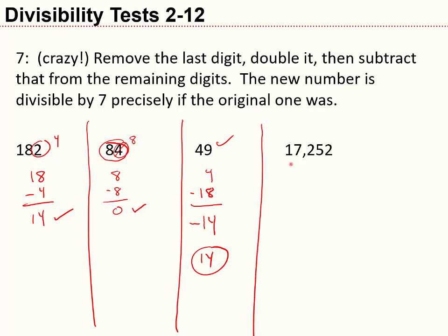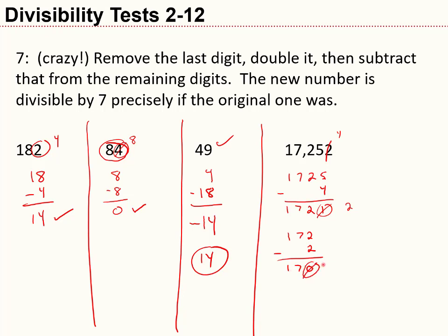Here's a last example: is 17,252 divisible by 7? I take off the 2, double it to get 4, and compute 17,25 minus 4 to get 17,21. I don't know if 17,21 is divisible by 7, so I repeat the trick: take off the 1, double it to get 2, compute 172 minus 2 to get 170. Then take off the 0, double it to get 0, and 17 minus 0 is 17. Since 17 is not divisible by 7, the original number 17,252 is not divisible by 7.